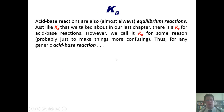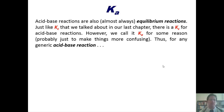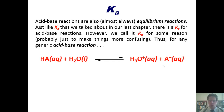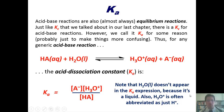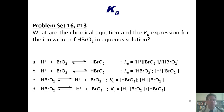Now we turn to Ka, the acid-base equilibrium constant. Acid-base reactions are almost always equilibrium reactions. Just like Kc that we discussed in our previous chapter, there is an equilibrium constant for acid-base reactions — we call it Ka, the acid dissociation constant. Please note that water doesn't appear in the Ka expression because it's a liquid; solids would also be omitted. H3O+ (hydronium) is sometimes abbreviated as H+. That takes us to a problem: what are the chemical equation and Ka expression for the ionization of HBrO2 in aqueous solution?